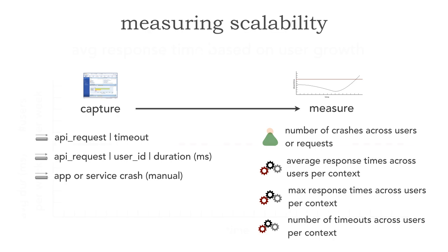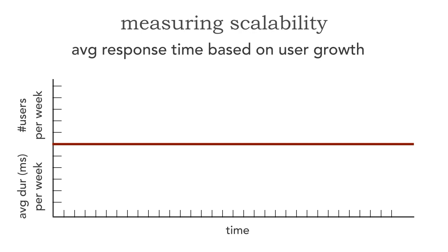Let me show you three graphs we can work with once you start measuring. Anytime you measure scalability, it's always going to be a correlation graph. On the bottom axis I have average duration, and the time slice is just over the course of a week, correlated with the number of users or requests. My preference is really to measure the number of requests increasing or decreasing rather than the number of users, because sometimes users don't do much within the system. I think both are worthy of measuring, but tracking requests is more fine-grained. But let's just use users here.